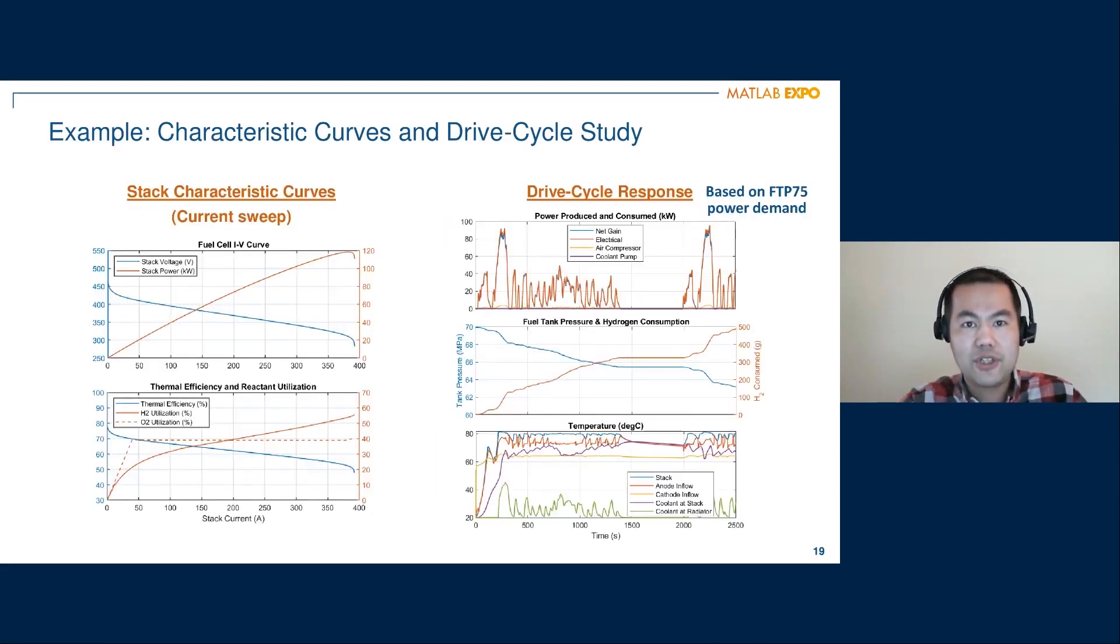So on the left, we're showing a few characteristic curves for the stack using a current sweep, basically linearly increase the current as the input. We can see that the voltage will drop as current increase, and the power output actually increase with the current until a certain point. That's where the maximum current is. The bottom left figure shows the thermal efficiency. It tends to drop when you have a higher current.